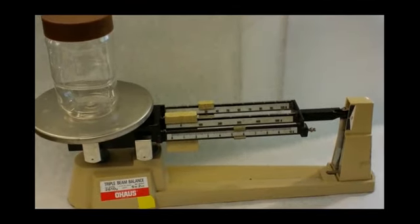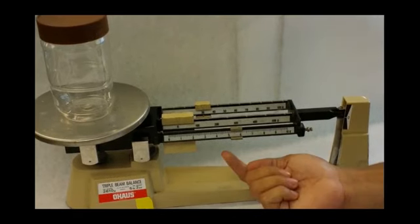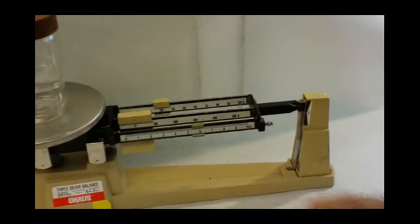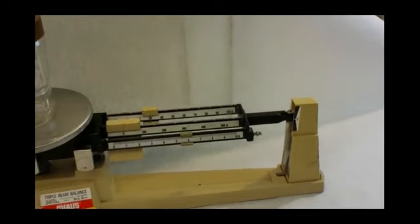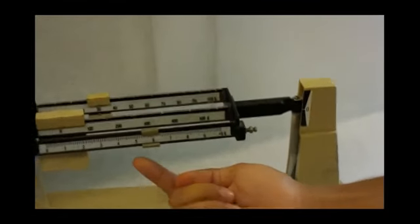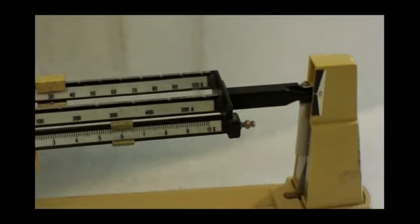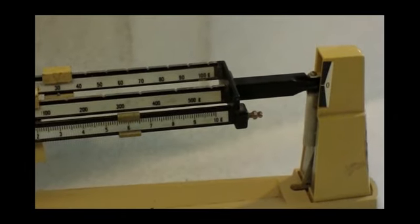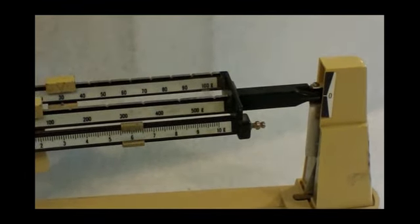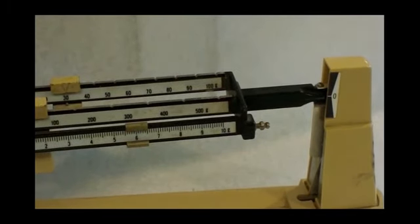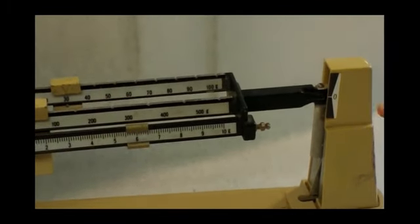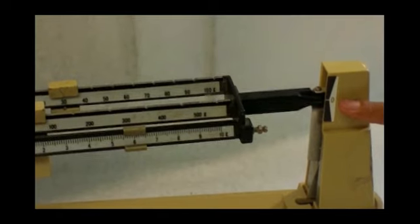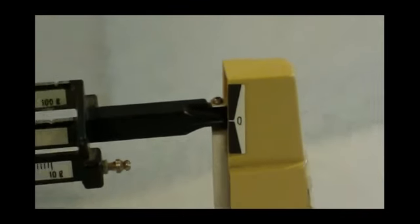So as we move the lowest slider, we'll start to notice that the lever will start to lower and get to a point where we can line up the line on the side. So this looks relatively balanced. You want to try your best to make sure that it's completely leveled off there. Just like that.